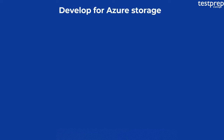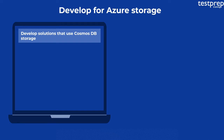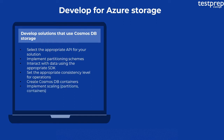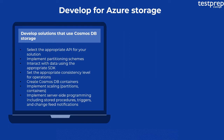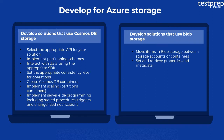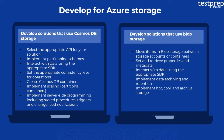Second, Develop for Azure Storage. Number one: Develop solutions that use Cosmos DB Storage. It contains seven subtopics: First, select the appropriate API for your solution. Second, implement partitioning schemes. Third, interact with data using the appropriate SDK. Fourth, set the appropriate consistency level for operations. Fifth, create Cosmos DB containers. Sixth, implement scaling, partitions, containers. Seventh, implement server-side programming including stored procedures, triggers, and change feed notifications. Number two: Develop solutions that use Blob Storage. It contains five subtopics: First, move items in Blob Storage between storage accounts or containers. Second, set and retrieve properties and metadata. Third, interact with data using the appropriate SDK. Fourth, implement data archiving and retention. Fifth, implement hot, cool, and archive storage.